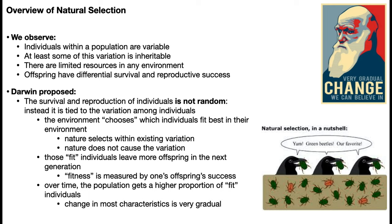Individuals are born and there's some variation within a population. Nature is going to choose which of those variants are the ones that will be successful because of the vagaries of the environment. But in contrast to Lamarck, nature doesn't cause the variation — you get whatever you get when you're born and you can't change it noticeably over your lifetime. Nature only selects from what variation is already there; it's like the dice are rolled, and nature doesn't actually make that variation happen.